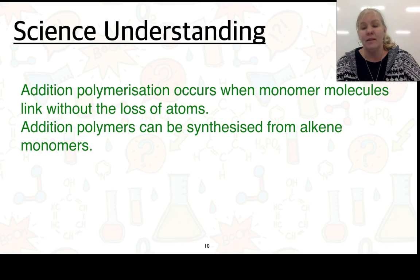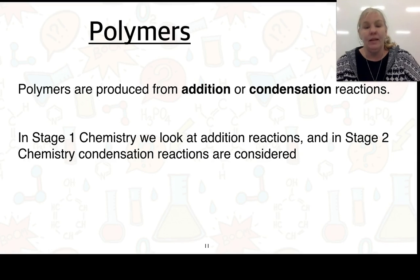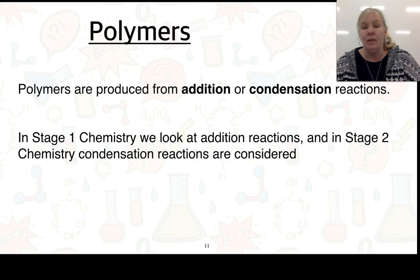Addition polymers can be synthesized from alkene molecules. Alkenes have a carbon-carbon double bond, which gives you the 'ene' name. There are two ways of forming polymers: addition and condensation. In Stage 1 chemistry with the new program, we'll be looking at addition reactions only, and in Stage 2 chemistry, condensation reactions will be considered.